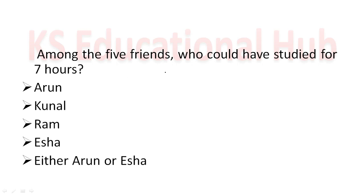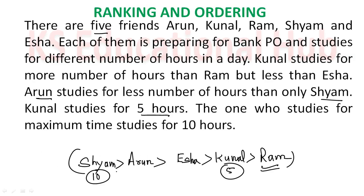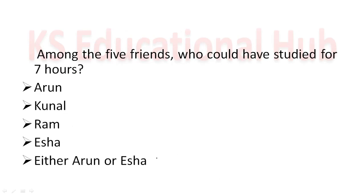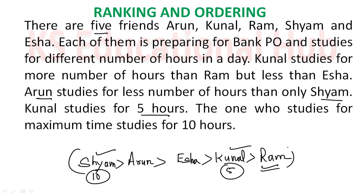Next question: Among the five friends, who could have studied for seven hours? Since Siam is at ten hours and Kunal is at five hours, the positions between them could be either Isha or Arun. So the answer is either Arun or Isha for seven hours.